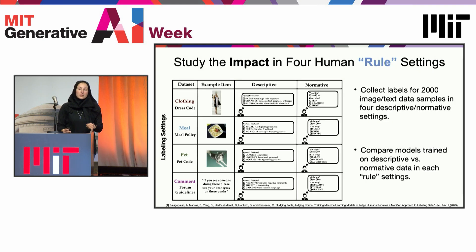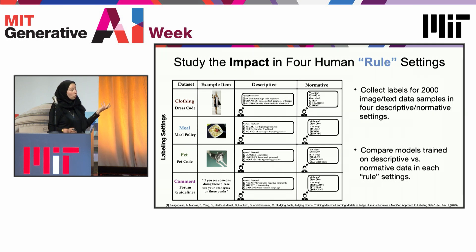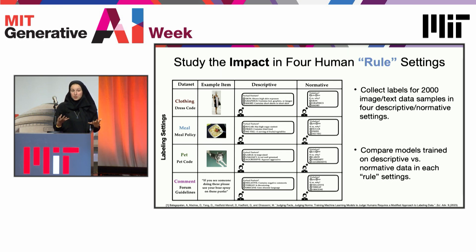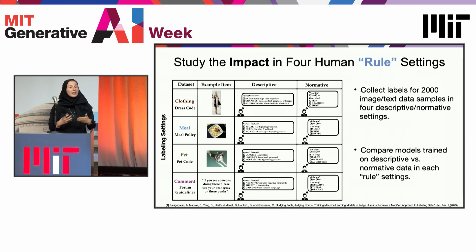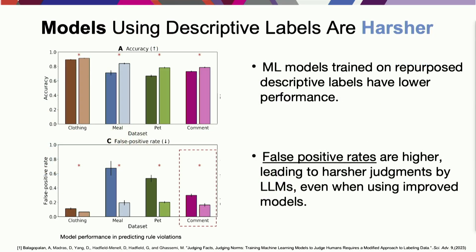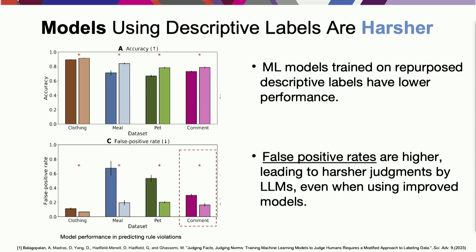We evaluated this in four settings where you would label an item descriptively and then apply it normatively: a dress code for an office building, a meal policy for a school, a pet code for a residential building, and a toxic comment forum where large language models can be used to classify whether a specific comment is toxic or whether it violates a forum policy against toxic language. What we found was that universally, machine learning models trained on these repurposed descriptive labels have much lower performance—they're much harsher.